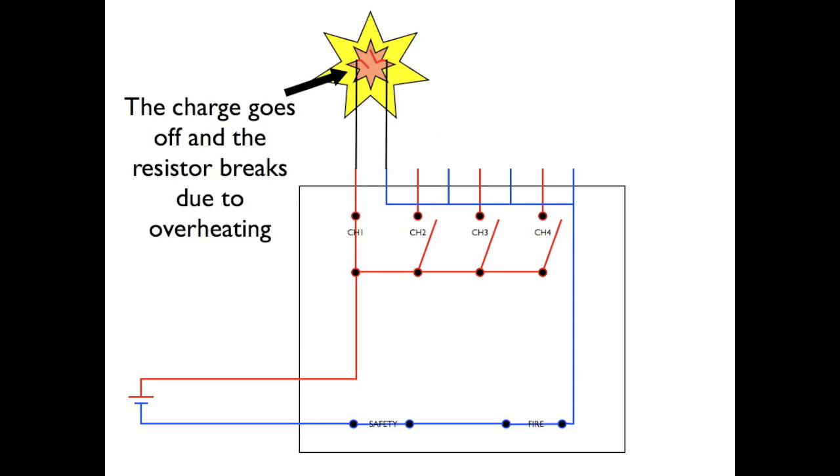After the charge goes off, the resistor should break due to overheating. This will stop the circuit from being completed and will stop your battery from overheating or shorting out. However, it is always good practice to turn off the channel selector switch to ensure that you don't short out your battery.